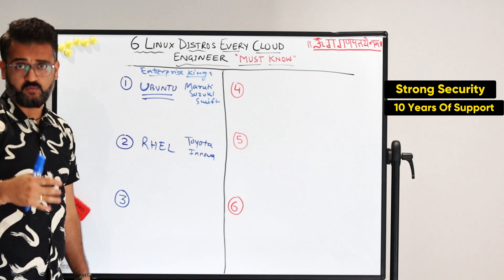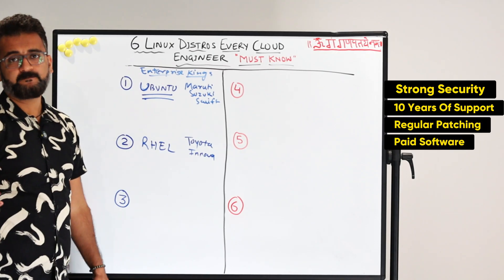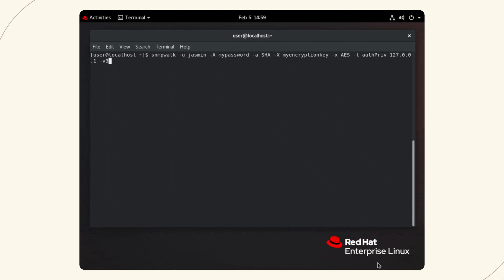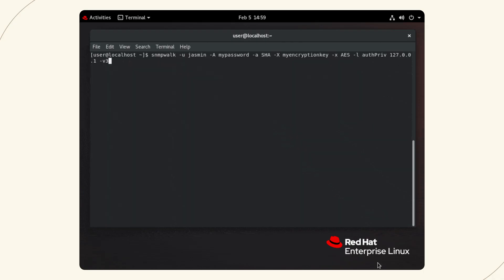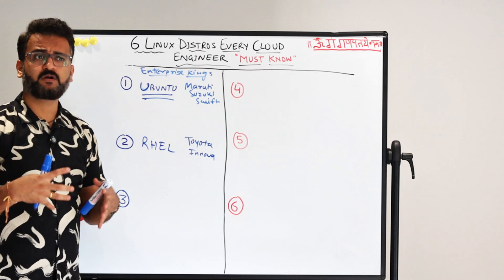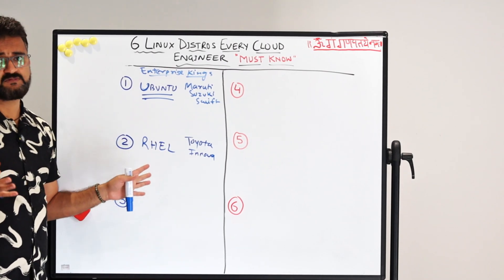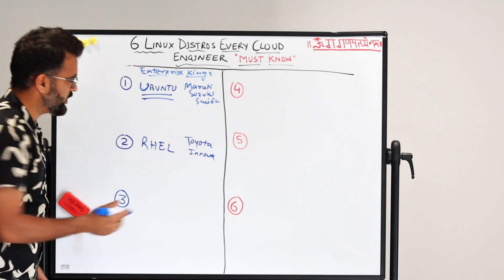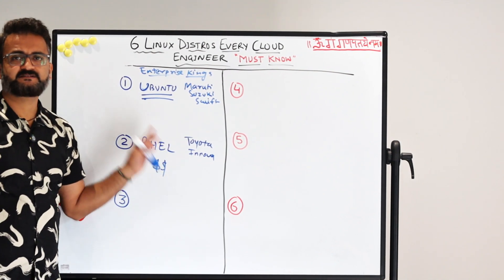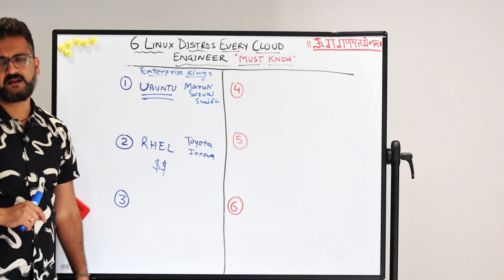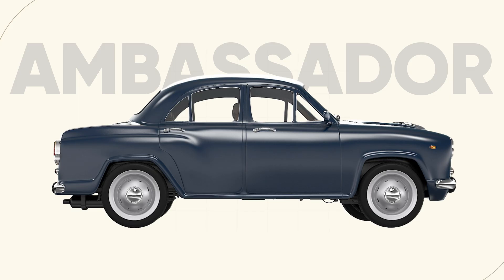RHEL is very strong in terms of security. It also comes with 10 years of support, with regular patching happening — but obviously it is not free, and it is very robust in terms of overall performance. If you are an enterprise architect or cloud architect working for big enterprise customers, you would always want to go with something highly reliable, even if it comes with some cost. Red Hat Enterprise Linux is a very good distribution for enterprise use cases.